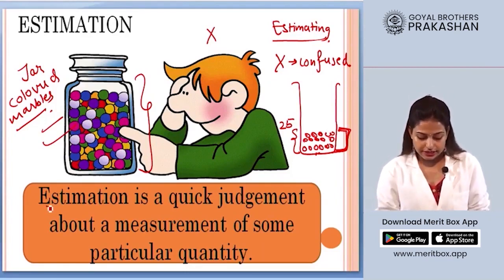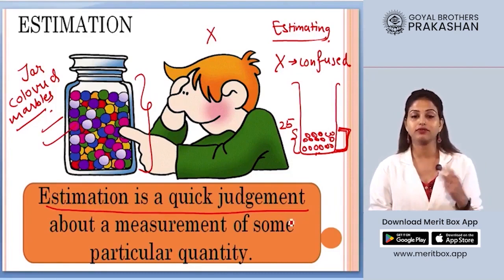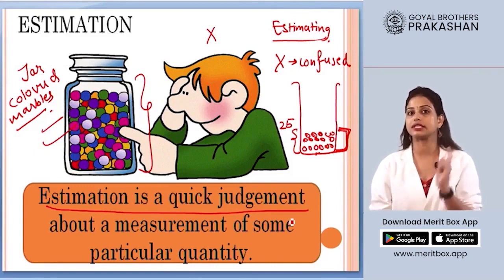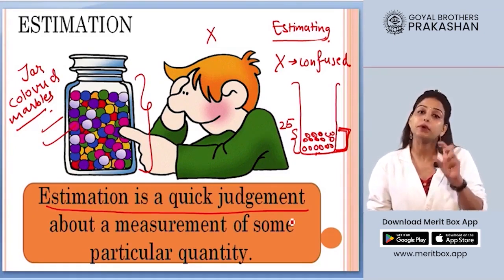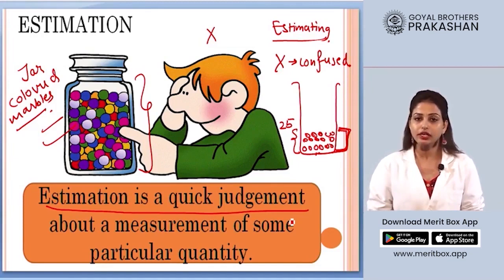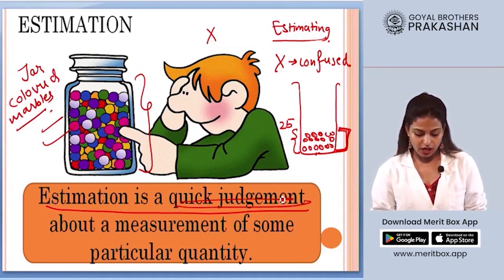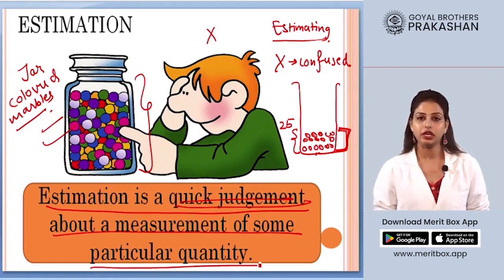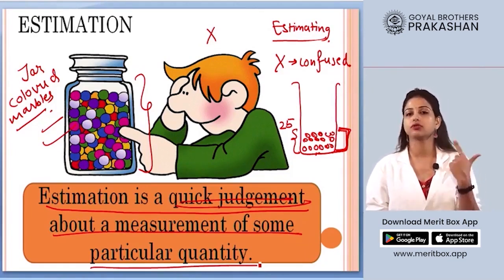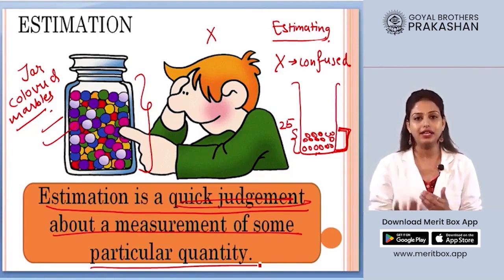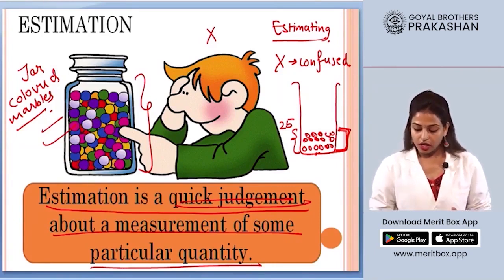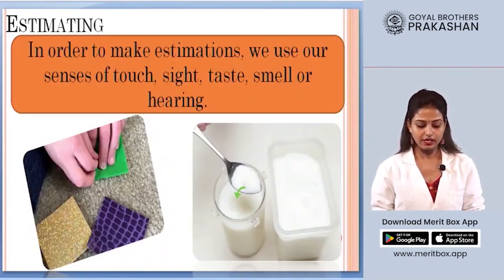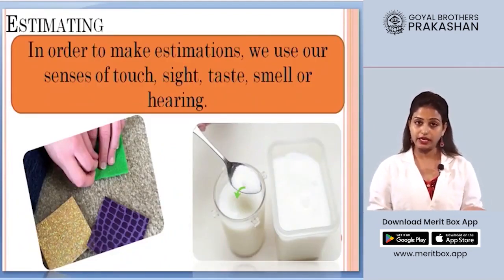If you already have some information about the measurement, it becomes easier to estimate. This is what estimation is — if you know even a bit of information about the measurement, you can estimate the value. Estimation is a quick judgment about a measurement of some particular quantity. It could be marbles in a jar, time, distance, or anything we deal with in daily life.